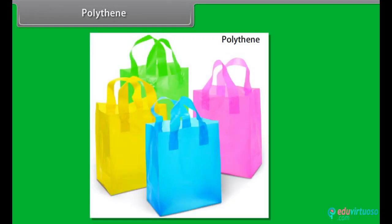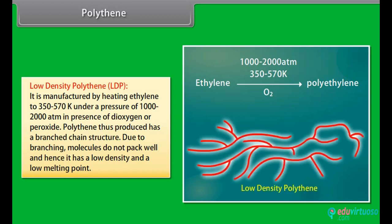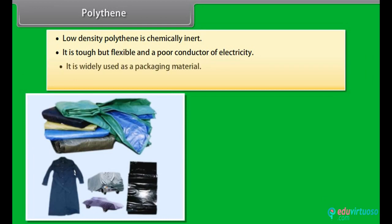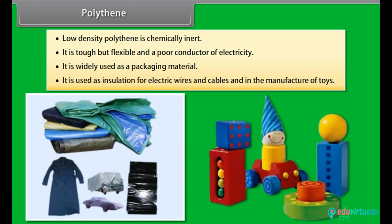Polythene is the most widely used addition polymer. Two types of polythenes are produced and they have widely different properties. Low-density polythene: it is manufactured by heating ethylene to 350–570 Kelvin under a pressure of 1000–2000 atm in the presence of dioxygen or a peroxide. The polythene thus produced has a branched chain structure. Due to branching, molecules do not pack well and hence it has a low density and low melting point. Low-density polythene is chemically inert, tough but flexible, and a poor conductor of electricity. It is widely used as a packaging material, as insulation for electric wires and cables, and in the manufacture of toys.